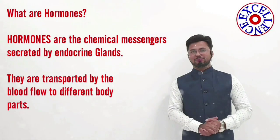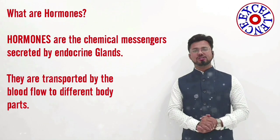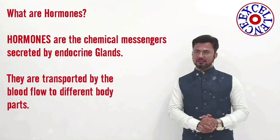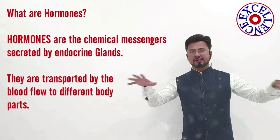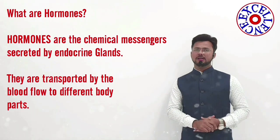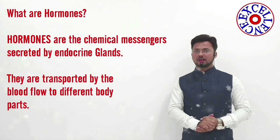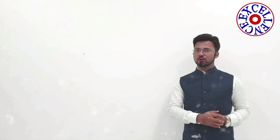The secretions of the endocrine glands are exclusively hormones. So hormones are the chemical messengers which are secreted by the endocrine glands and are distributed and circulated to the different parts of the body with the help of the flow of blood. The different hormones released in the human body are released by the different endocrine glands, which serve different physiological functions.